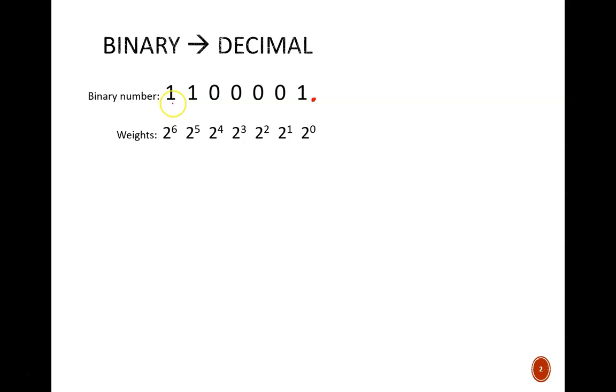Until I get to the leftmost number, which in this case has a weight of 2 to the 6. And now I take the 1's and the 0's in the binary number and multiply them by the weights. So 1 times 2 to the 6 leaves me with 2 to the 6 as part of my final sum. 1 times 2 to the 5, that 2 to the 5 still sticks around. 0 times 2 to the 4 is just going to give me 0, so I don't even need to include that as part of my sum. So we add up all of those powers that stick around, and it turns out the final sum is 97.